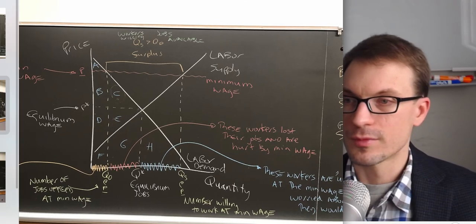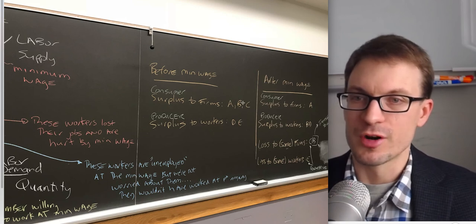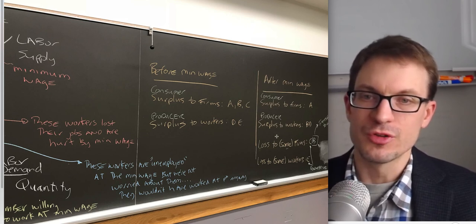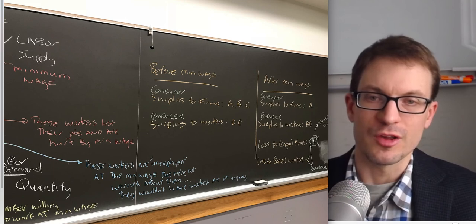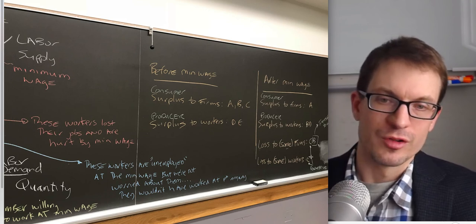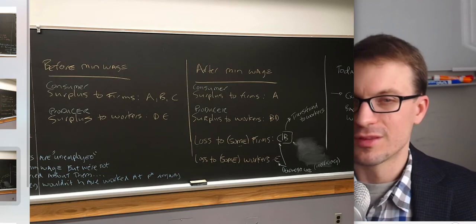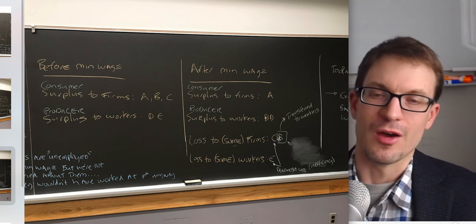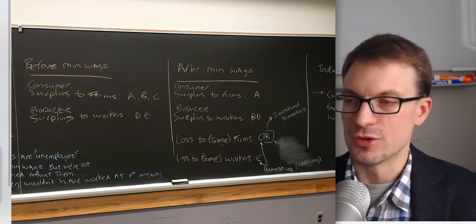Summary: before the minimum wage, consumer surplus to firms is area A+B+C; producer surplus to workers is D+E. After the minimum wage, consumer surplus to firms is A; producer surplus to workers is B+D. The loss to firms was B+C: area B went to workers as a pay raise, area C went to deadweight loss. Workers lost area E, which went strictly to deadweight loss. Area B was lost by firms and transferred to workers in the form of higher wages.